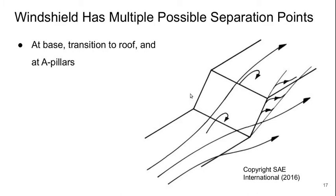The windshield has multiple possible separation points. You can get flow separation at the base because there's an inflection point here, so there's an adverse pressure gradient approaching it. At the transition to the roof there's an opening of the flow and again a locally adverse pressure gradient after an overspeed. And on the A-pillars, as the flow spills over the side, we may get longitudinal vortices forming.